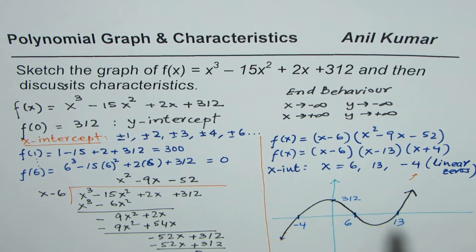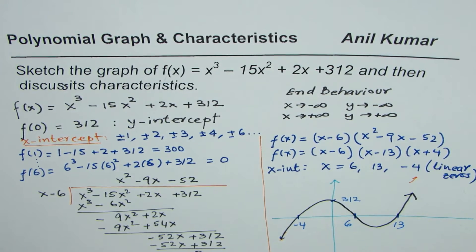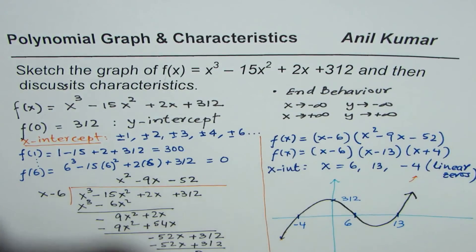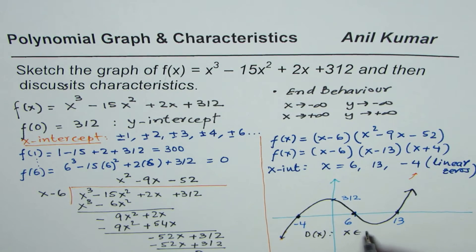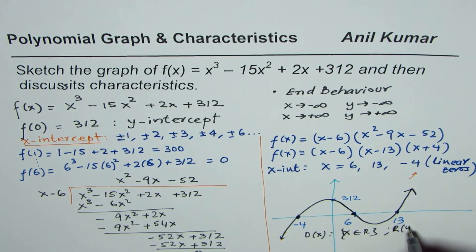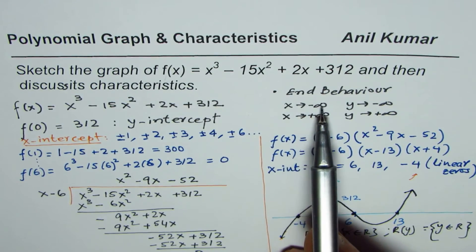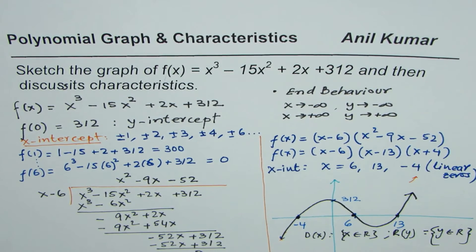So as far as the characteristics are concerned, you can say it has two turning points, three zeros, end behavior, domain and range. So those are important characteristics. So mention end behavior, mention the zeros, and domain range. So we know domain of this function is x belongs to real numbers, and range is y belongs to real numbers. And the end behavior is when x approaches -∞, y approaches -∞, and when x approaches +∞, y approaches +∞.